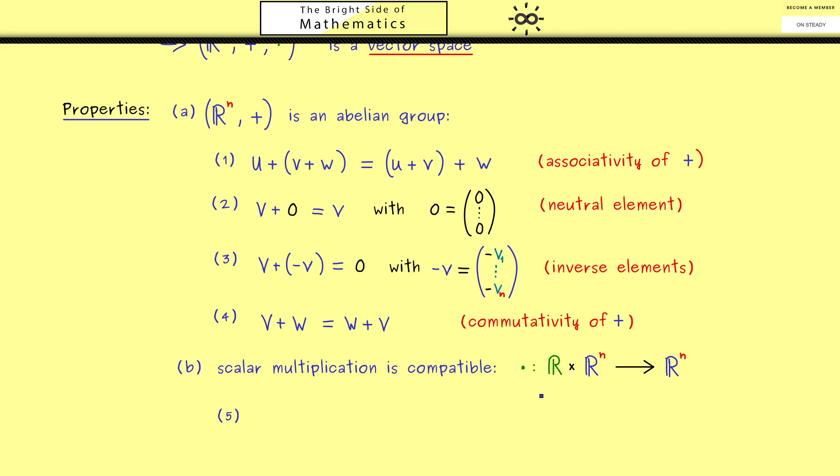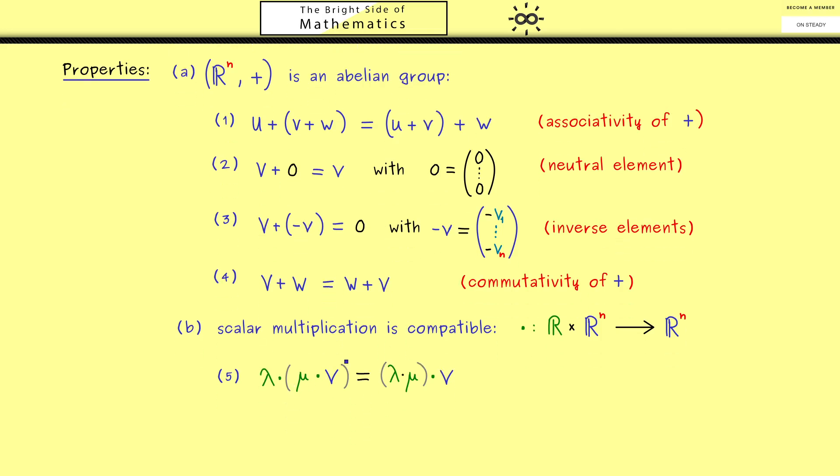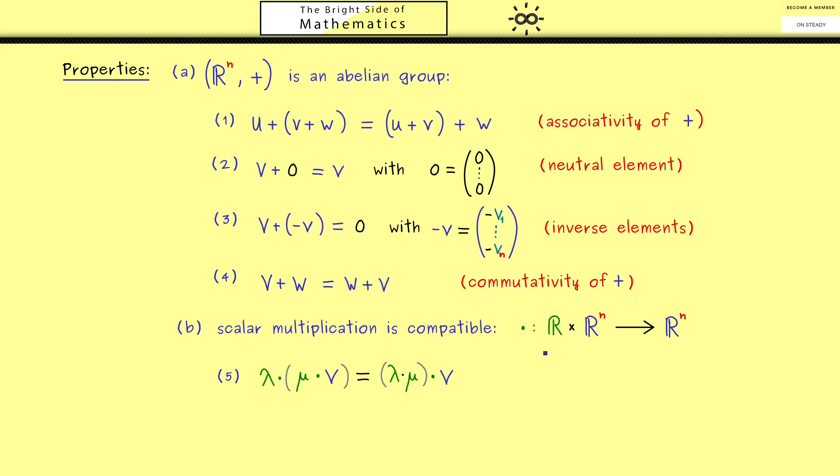However please don't forget here we defined a new map we call a multiplication but we also have a multiplication in the scalars. Hence multiplying two scalars lambda and mu is not a problem for us. We simply get a new scalar here. And this new scalar we can use as a scaling factor for vector v. However this should be the same when we first scale the vector v with the scalar mu and then scale it again by the vector lambda. And exactly this is what we want when we say that the scalar multiplication is compatible with the multiplication in R itself.